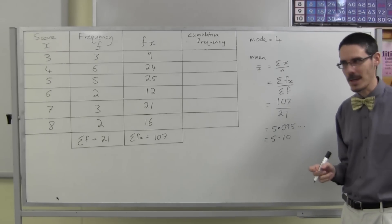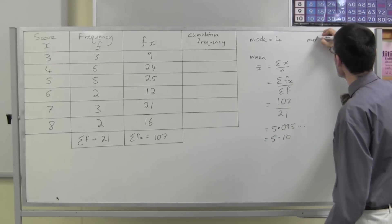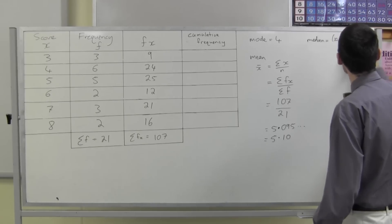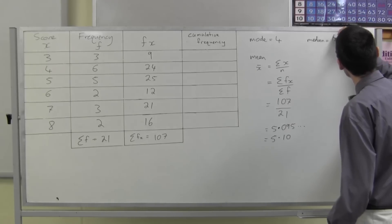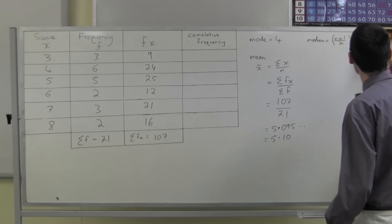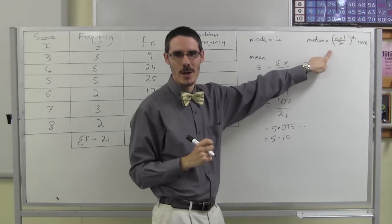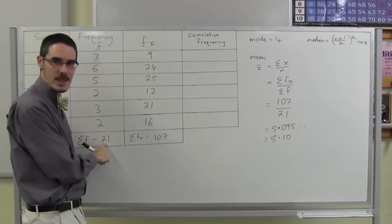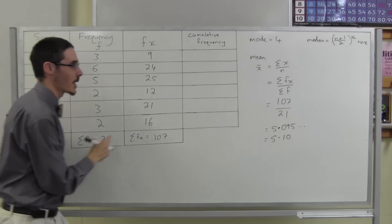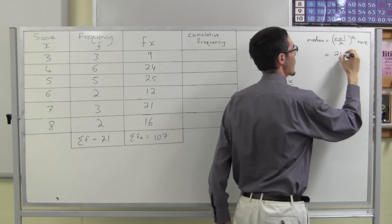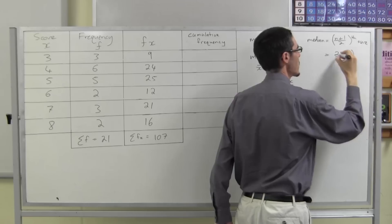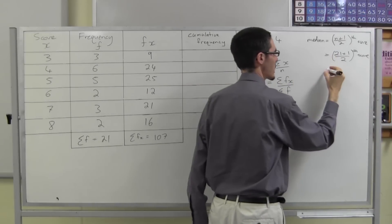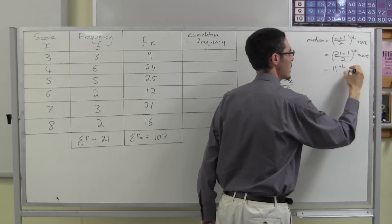What about the median? The formula says the median is the (n+1)/2 score. There are 21 scores, not 6. That means I want the (21+1)/2 score — 22 divided by 2 — the 11th score. How am I going to find the 11th score?